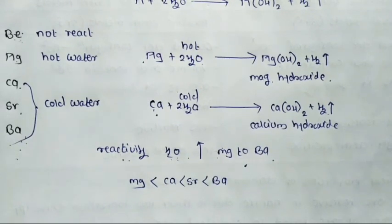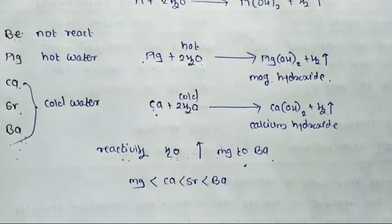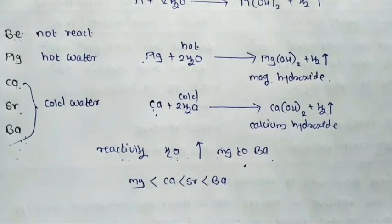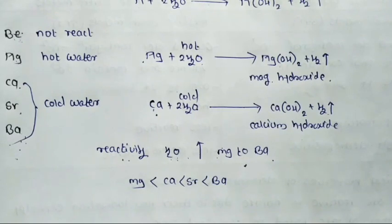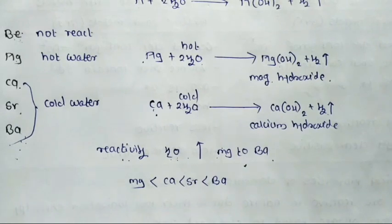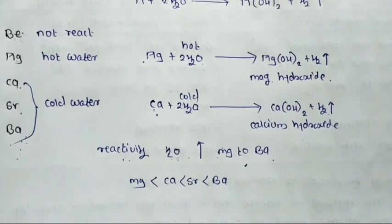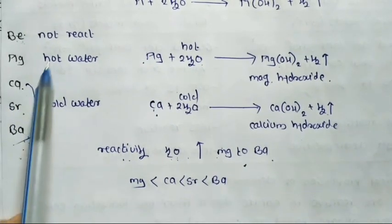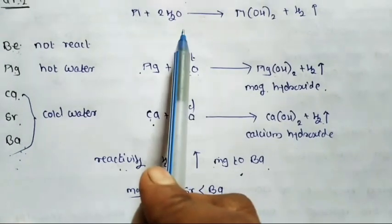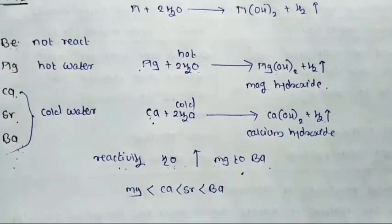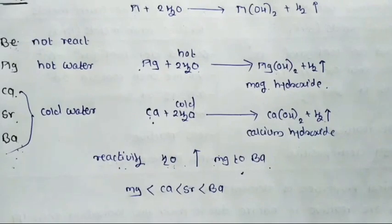In today's lecture we studied about the chemical properties — two chemical reactions — of Group 1 and Group 2. The first reaction: alkali metals and alkaline earth metals react with oxygen to form a layer of oxides. The second reaction: alkali metals and alkaline earth metals react with water to form metal hydroxide and evolution of H₂ gas.